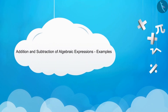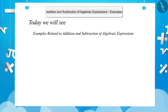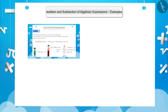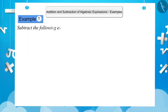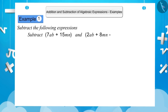In the last video, we learned about adding and subtracting algebraic expressions. Let us understand it better with some examples. Example 1: Subtract the following expressions — 7ab plus 15mn and 2ab plus 8mn minus 3k. We write: 7ab plus 15mn minus (2ab plus 8mn minus 3k).